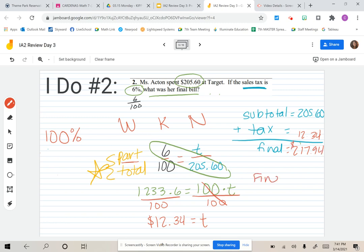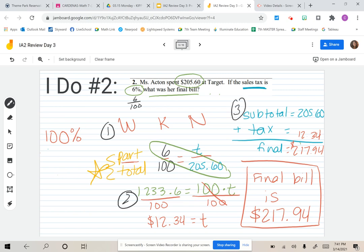The final bill is $217.94. We used our what-no-need proportion, then cross multiplied and divided. At the end, we used what we found and added it to the subtotal to get the final bill. We're going to try some more percent problems in a bit.